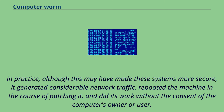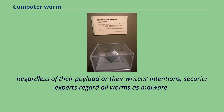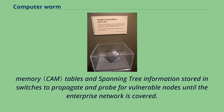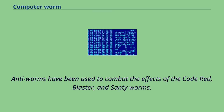Regardless of their payload or their writer's intentions, security experts regard all worms as malware. One study proposed the first computer worm that operates on the second layer of the OSI model, utilizing topology information such as content-addressable memory tables and spanning tree information stored in switches to propagate and probe for vulnerable nodes until the enterprise network is covered. Anti-worms have been used to combat the effects of the Code Red, Blaster, and Sasser worms. Welchia is an example of a helpful worm.